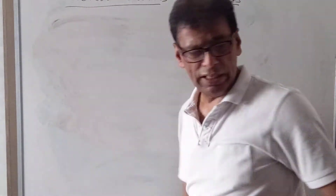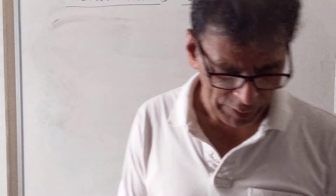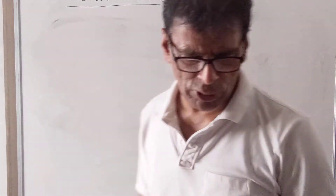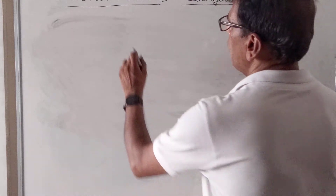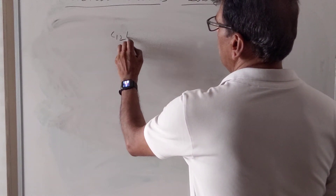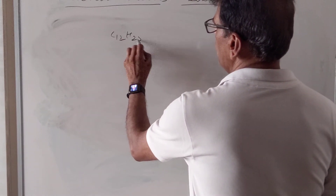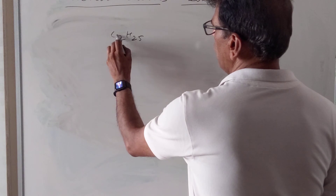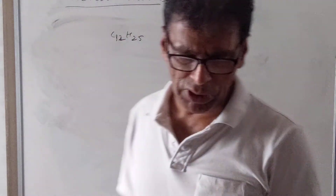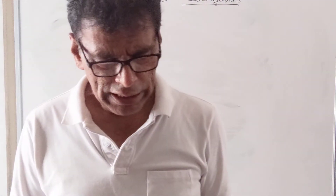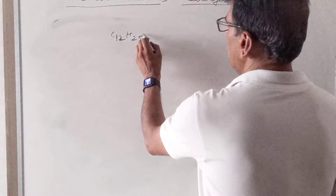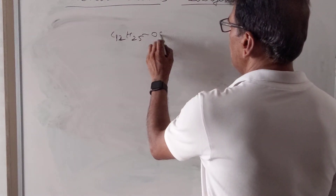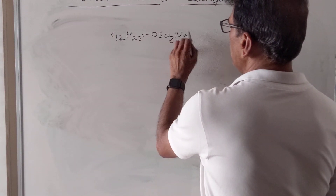Detergents are generally of two types. The first type contains long-chain alkyl hydrogen sulfates, for example a dodecyl group (C12H22) in sulfonic acid form, producing sodium salt of dodecyl sulfonate.